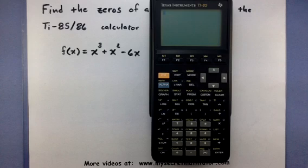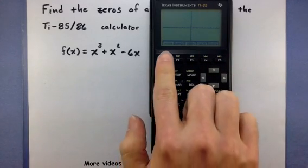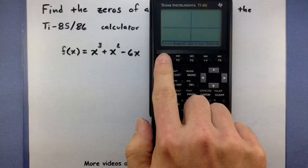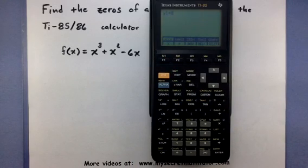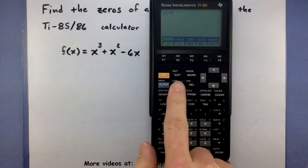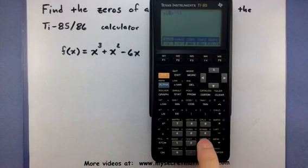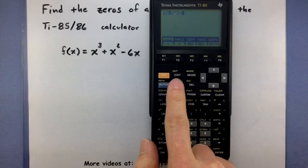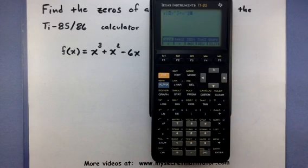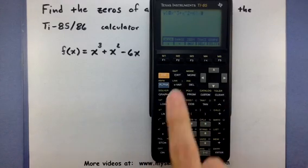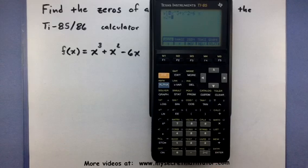To get this function entered into the calculator, go to your graph menu. That brings up our axes, x and y, and under f1 it says y(x). Press that. From this screen, we can enter our function. We want x cubed, so use the x variable, carat 3, plus x squared, x carat 2, and minus 6x. Press enter. Now that is stored in as y1.